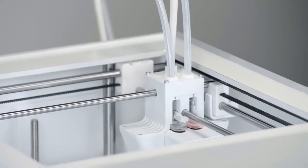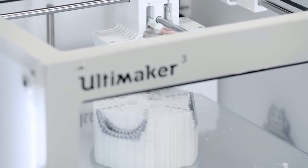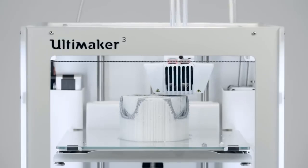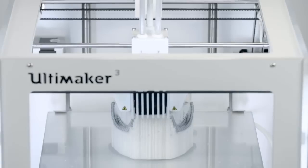All you really need to do is insert the glass build plate, plug the machine in, and flip the power switch. The printer will take care of the rest.